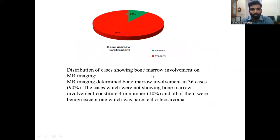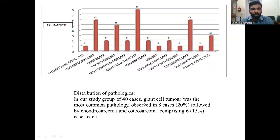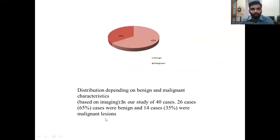Distribution of cases showing bone marrow involvement on MRI: bone marrow involvement was determined in 36 cases. The 4 cases not showing bone marrow involvement were all benign except one, which was a periosteal osteosarcoma. In our study group of 40 cases, giant cell tumor was the most common pathology, observed in 8 cases, followed by chondrosarcoma and osteosarcoma comprising 6 cases each. Based on imaging, 26 cases were benign and 14 cases were malignant lesions.